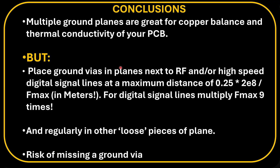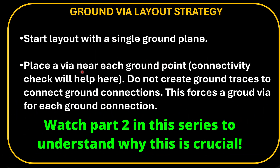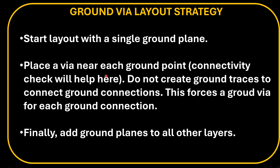There's one problem left: the risk of missing a via. There is a way around that with PCB layout software. You start the layout with a single ground plane — for instance, on inner one — and then place a via near each ground point. Your connectivity check will help here, because as long as you don't place that via, there will be a connectivity problem. Be absolutely sure that you do not create ground traces on the top layer to connect to ground points, because then you would miss one of these ground locations. This way of working forces a ground via at each ground connection. When your board is completely done, then you add ground planes on all layers. If you rework your board after that, remove all the ground planes on other layers again and make sure each ground point has a via.